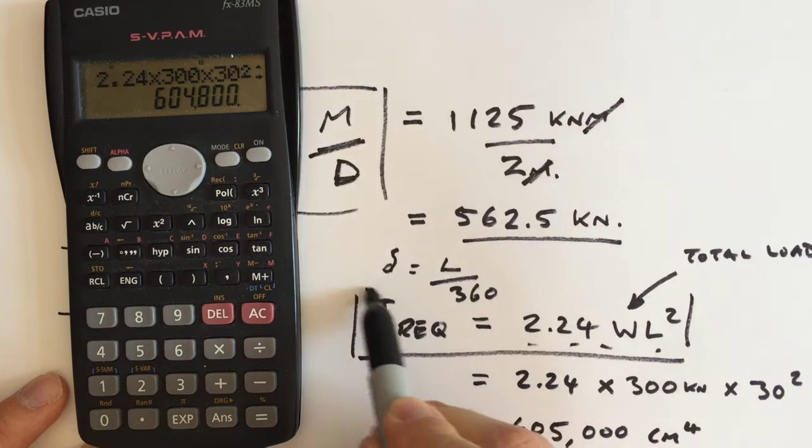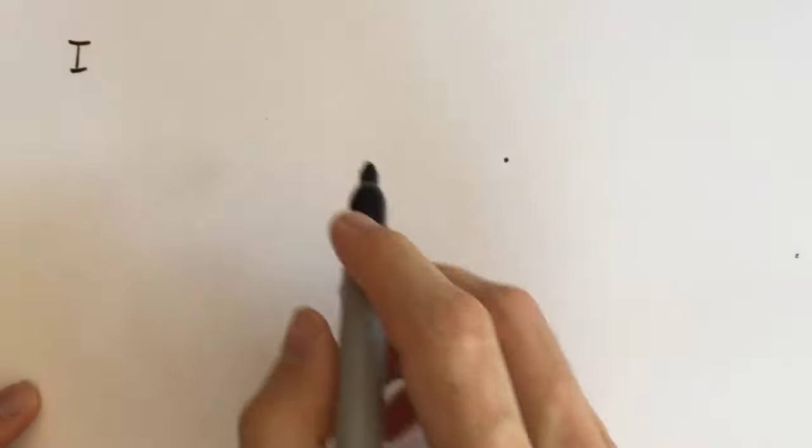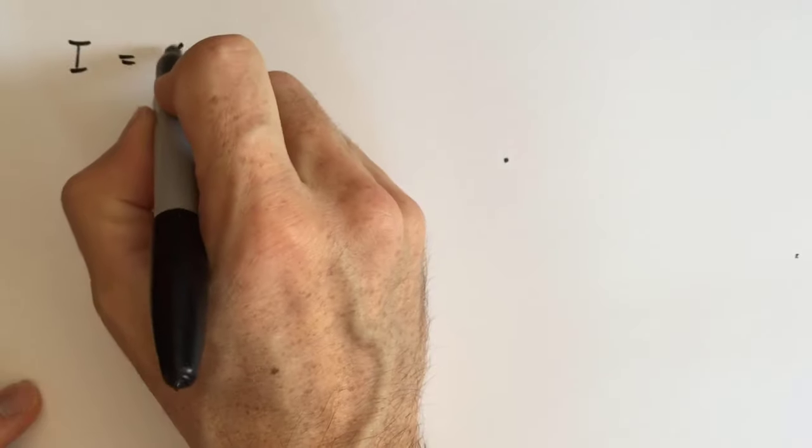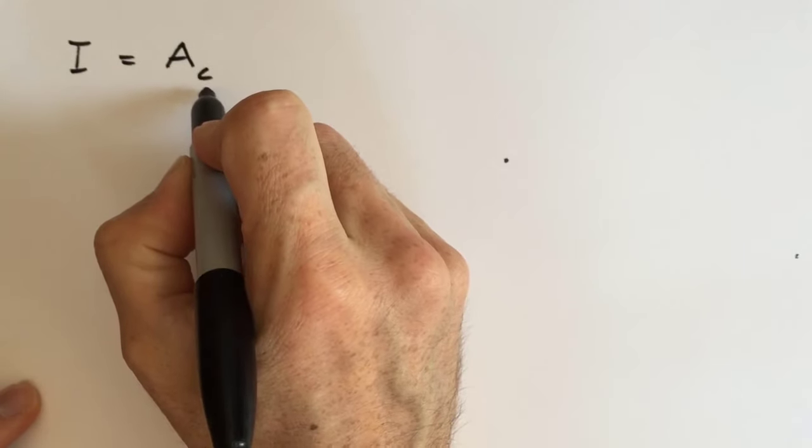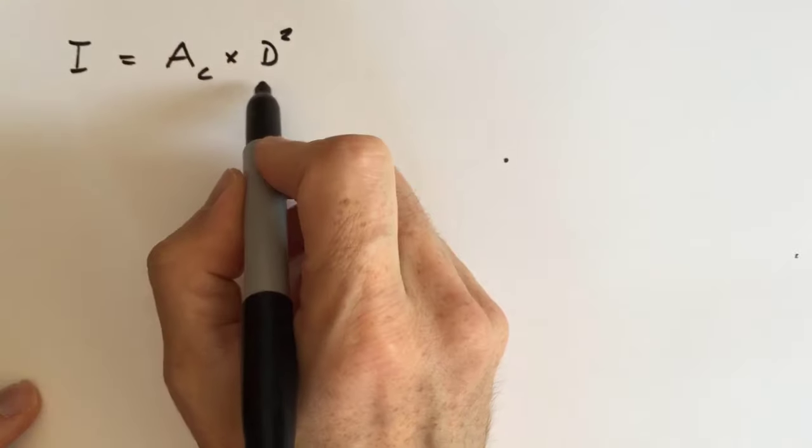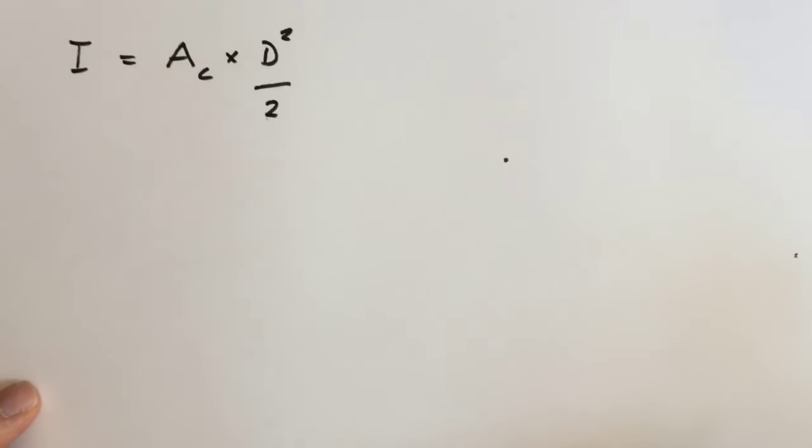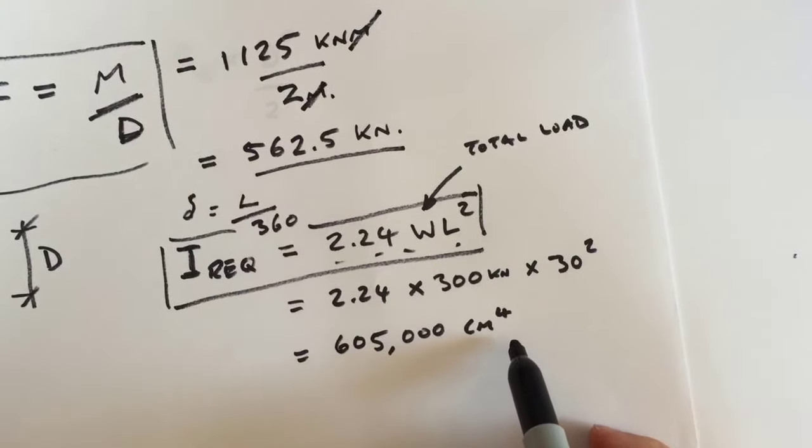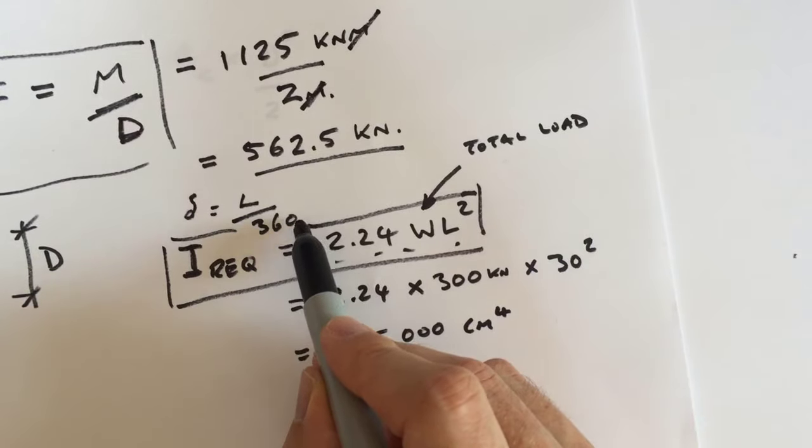So there's a really neat little formula that will tell you the I value of a truss and it's approximate. I is the area of the chord, top or bottom chord, multiplied by the depth squared over 2. So once you've sized your top and your bottom chord and you have a preliminary size for that based on the axial load that it's able to take, you can then find out your I value and compare it with your I required and just check that the deflection is not greater than span over 360.